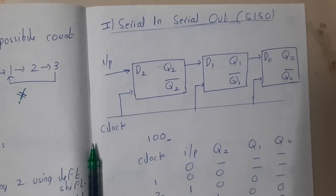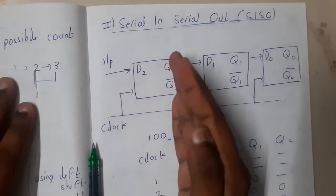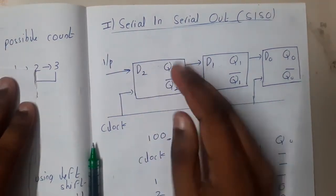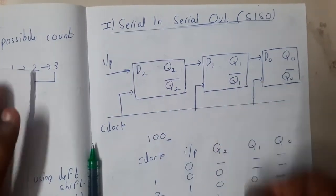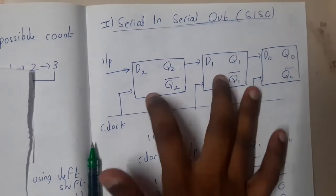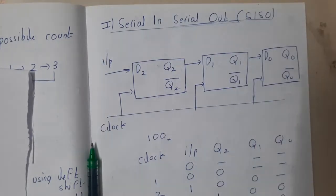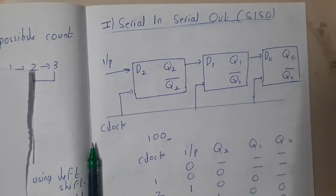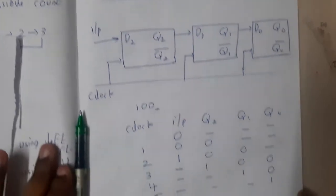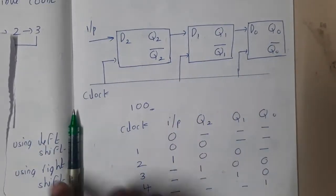The first type is Serial In Serial Out. From the name itself, you can understand that you push one bit at a time into the register and you take the output also bit by bit. You may remember the diagrams, but just keep the concept in mind — there is no need to memorize every diagram.